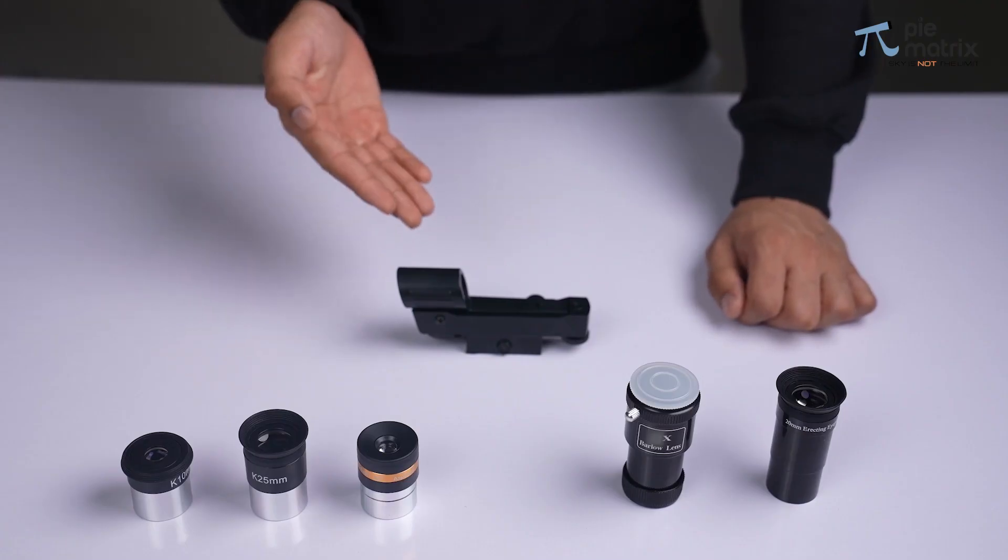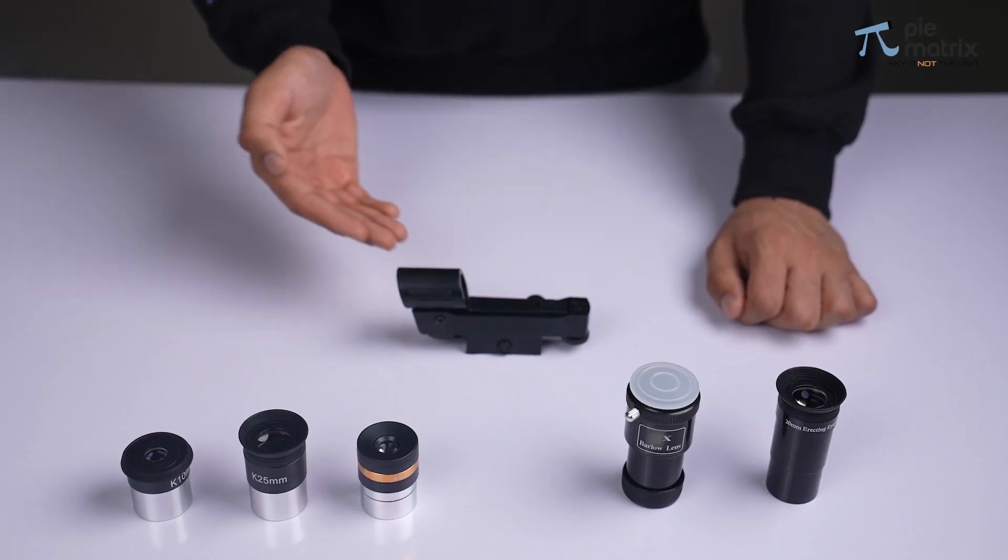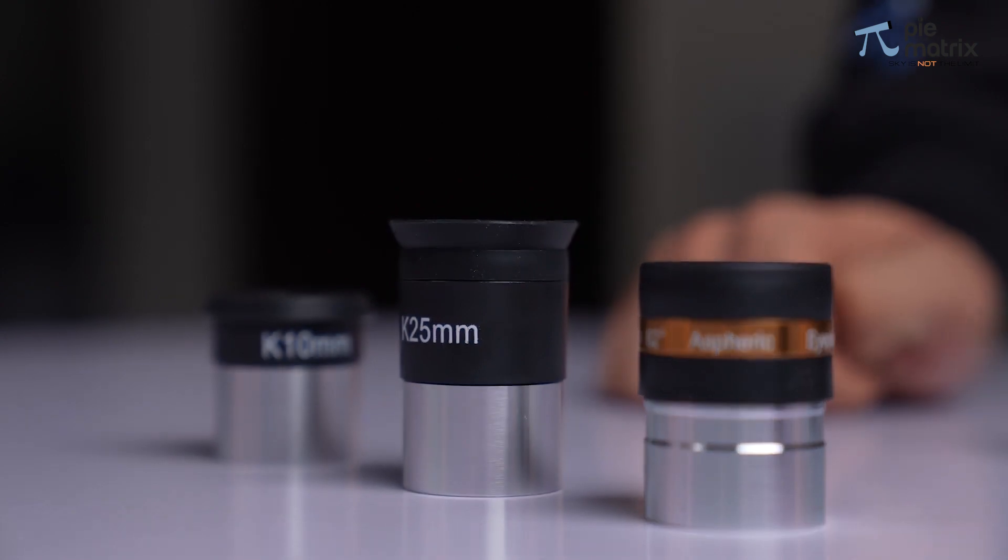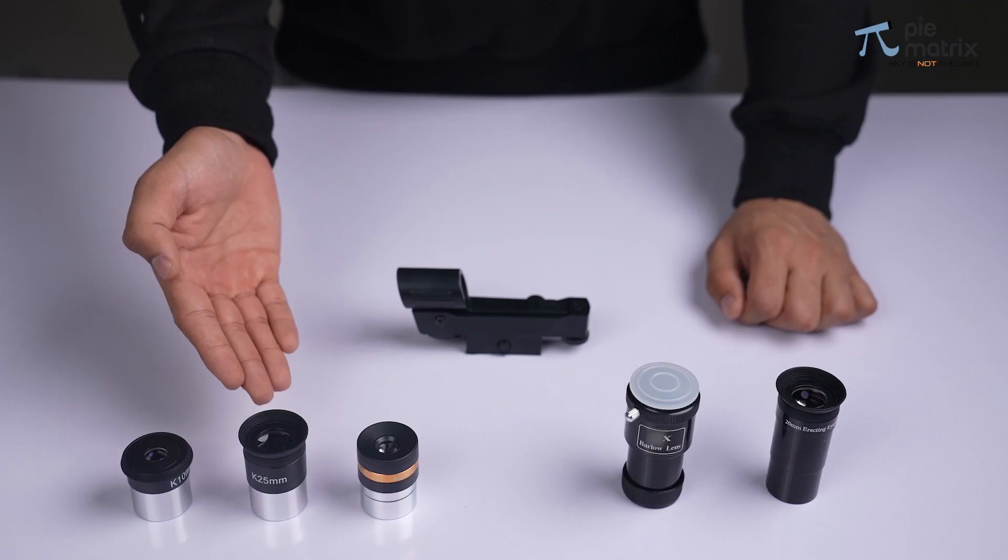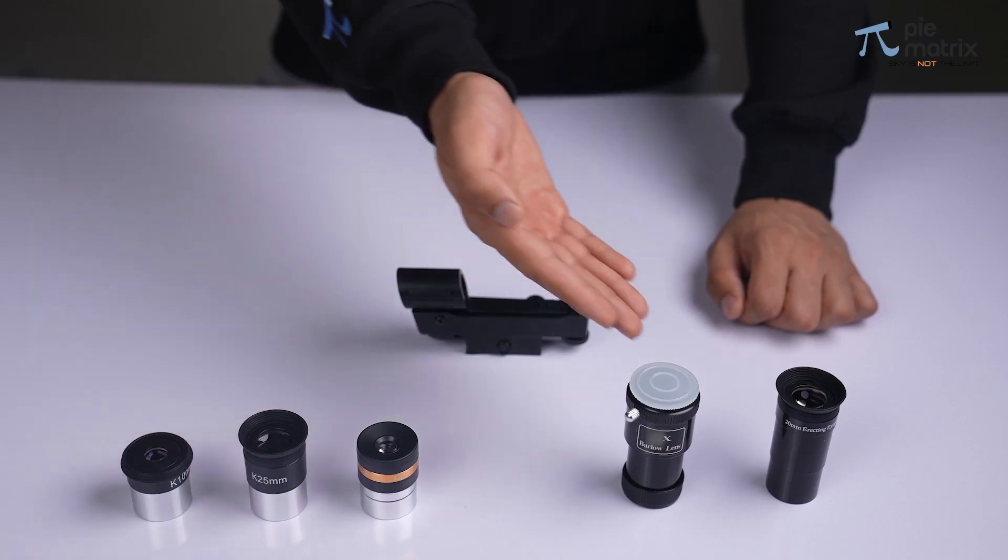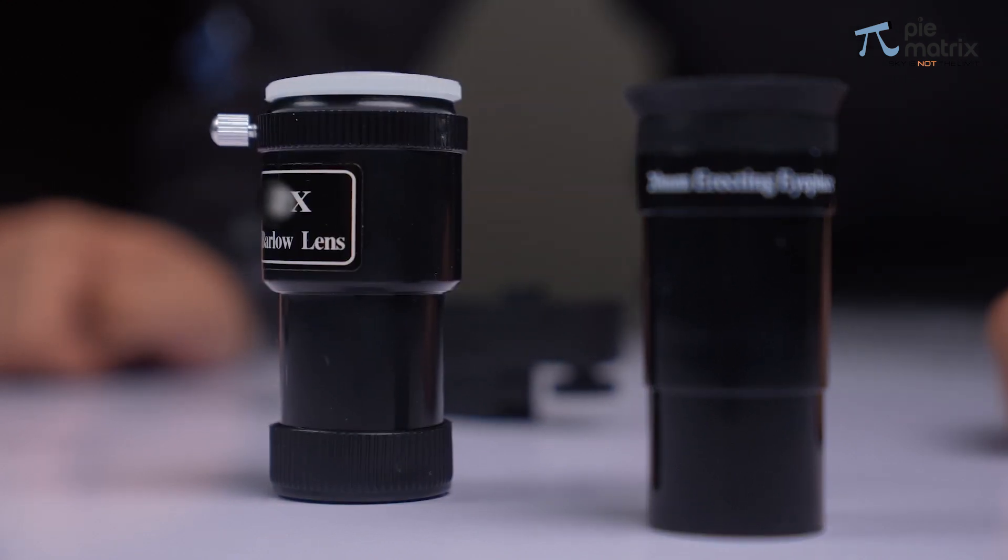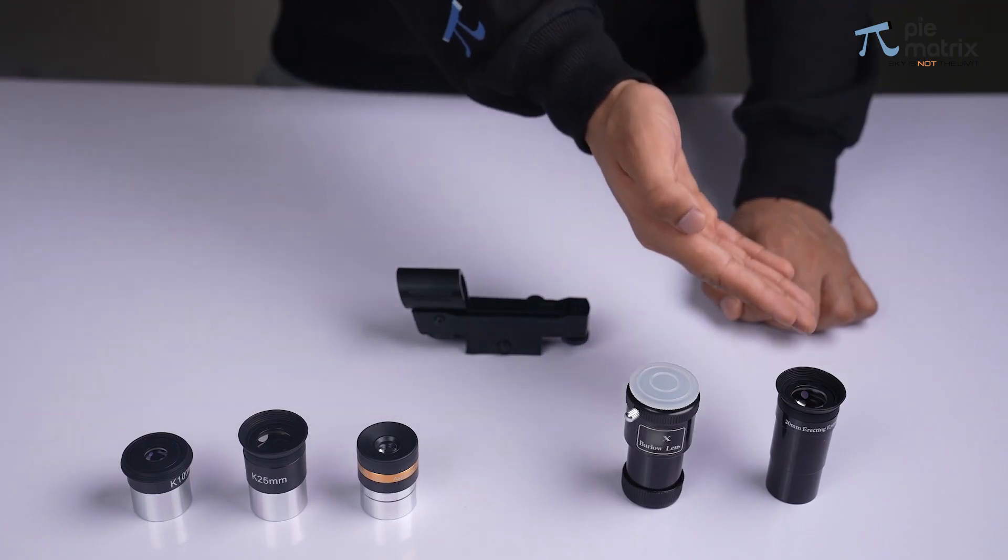We get a red dot finder scope, a 10mm and a 25mm Kellner eyepiece, along with a 6mm aspheric eyepiece, a 3x Barlow lens, and finishing it off with a 20mm erecting eyepiece.